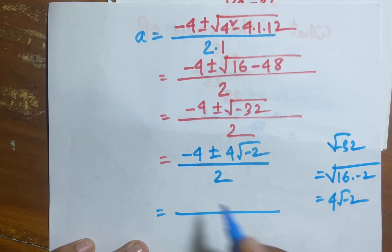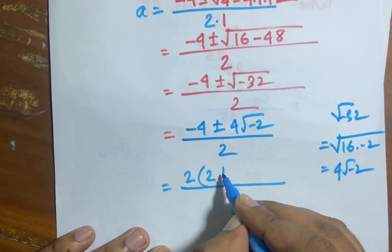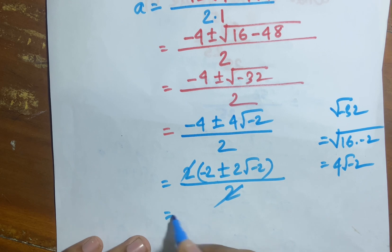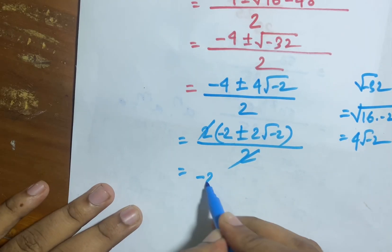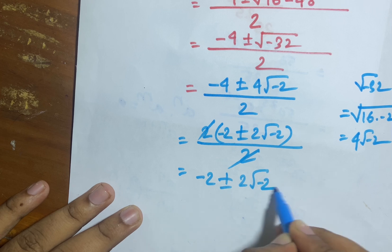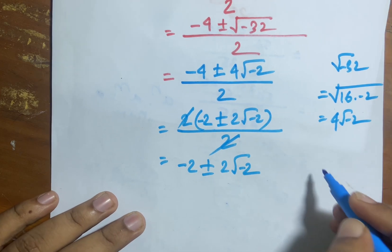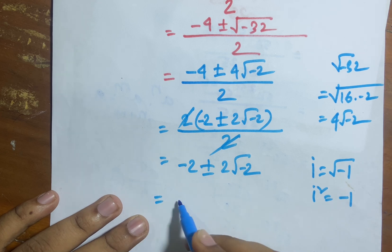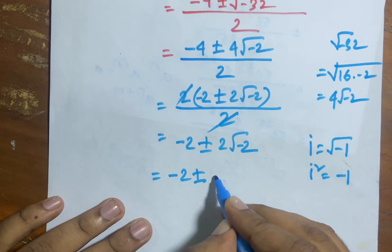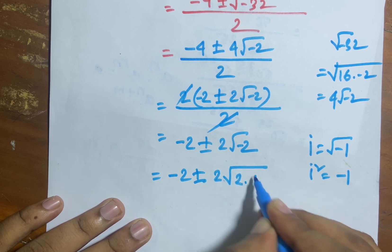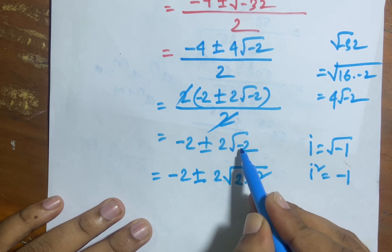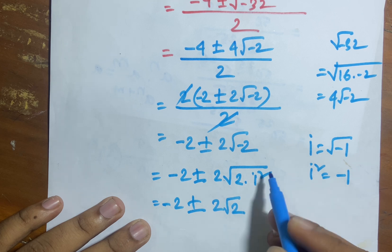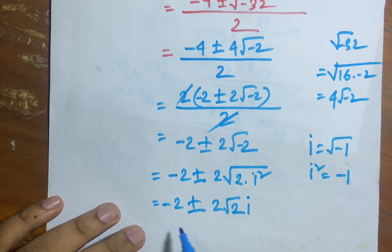So we have 4 root over minus 2. Now 2 is common, giving 2 times (minus 2 plus or minus 2 root over minus 2) divided by 2, and 2 is cancelled. So the result is minus 2 plus or minus 2 root over minus 2. This is a complex number. We know i equals root over minus 1 and i squared equals minus 1. So I can say minus 2 plus or minus 2 root over 2 times i squared, and since i squared times 2 equals minus 2, the square root cancels to just i. The final value is minus 2 plus or minus 2 root 2 times i.